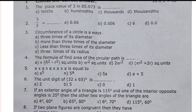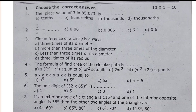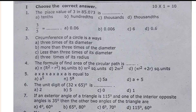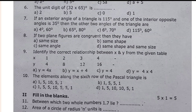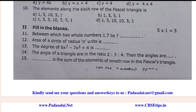Let's get into the video. Between which two whole numbers is 1.7? Area of a circle of radius n units is blank. The degree of 6x⁷ minus 7x³ plus 4 is blank. The angles of a triangle are in a ratio 2:3:4, then the angles are blank. What is the sum of the elements in the 9th row of Pascal's triangle?